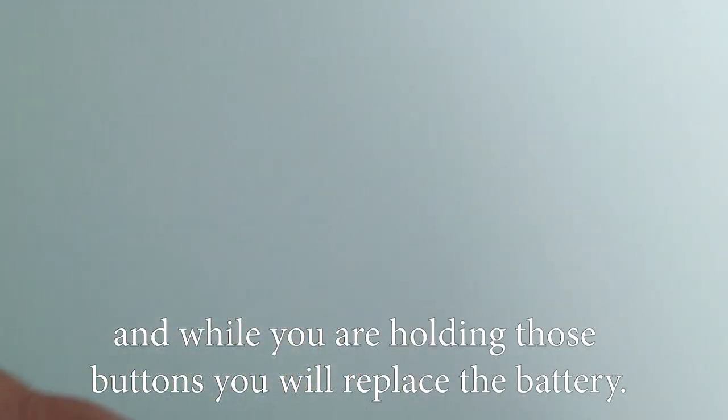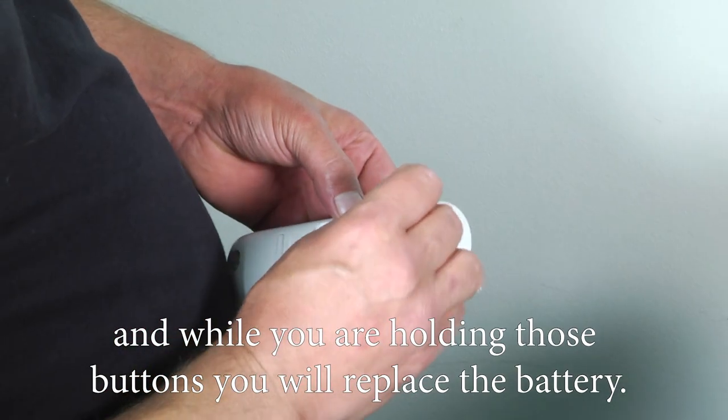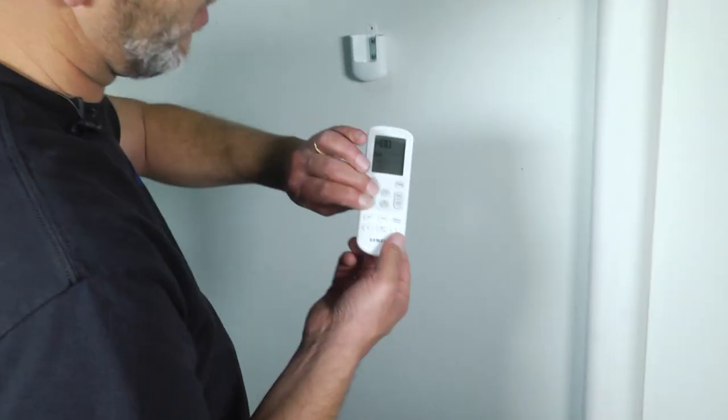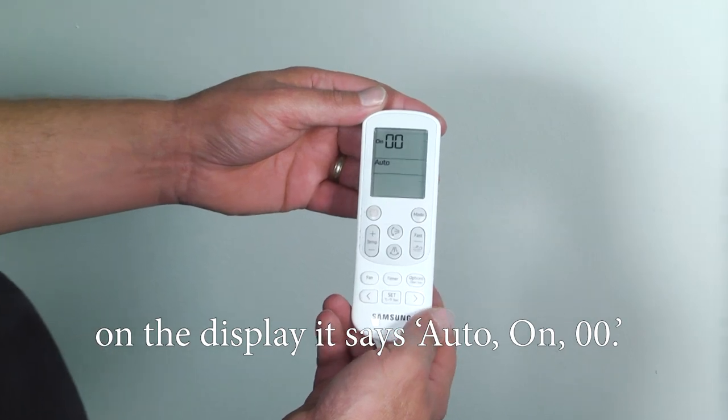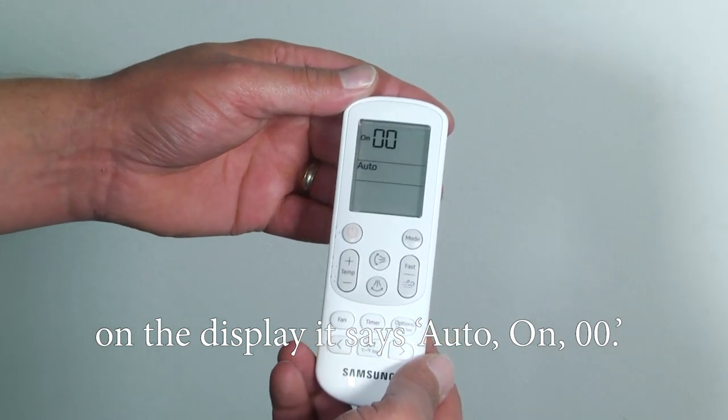you're going to hold your temperature up and down buttons. And while you're holding those buttons, you'll replace the battery. You'll know you've done it correctly if when it comes back on the display it says auto on zero zero.